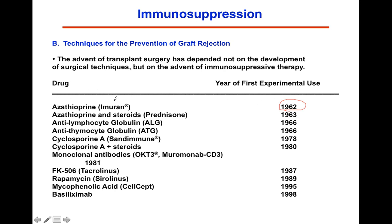Imuran was one of the first compounds tested on dogs in transplantation, and was used in patients rather quickly — less than a year after the dog trials. They did a few animal studies and it was FDA approved. We'd never see that today. That led to the whole emergence of transplantation therapy through the use of immunosuppression.